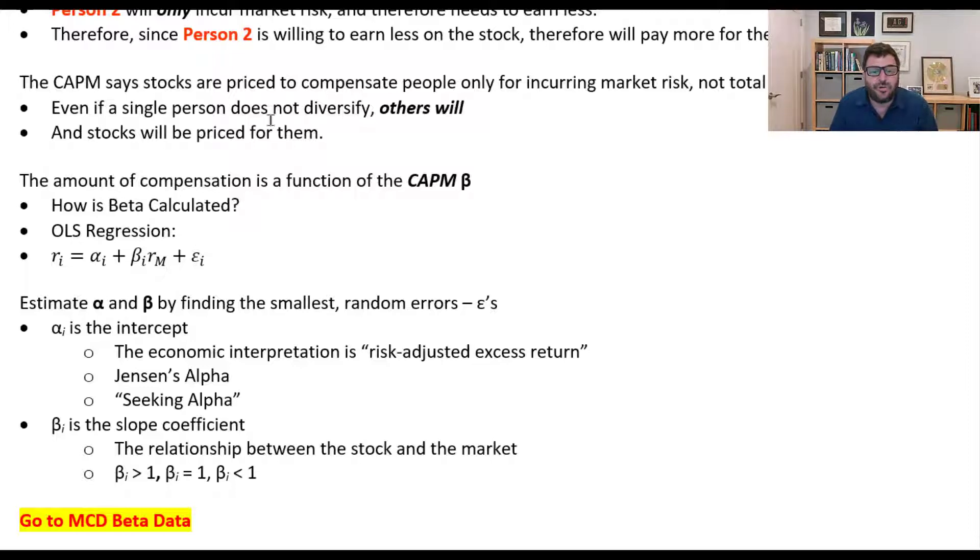And the amount of the compensation that you receive is a function of the capital asset pricing model beta. So how do we calculate beta? How is beta calculated? Well, we're going to do an ordinary least squares regression. This is the regression model. We're going to estimate alpha and beta by finding the smallest number of random errors.